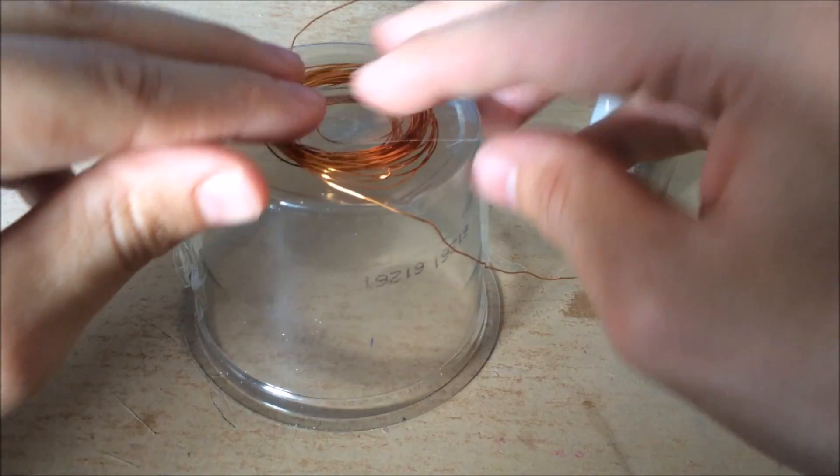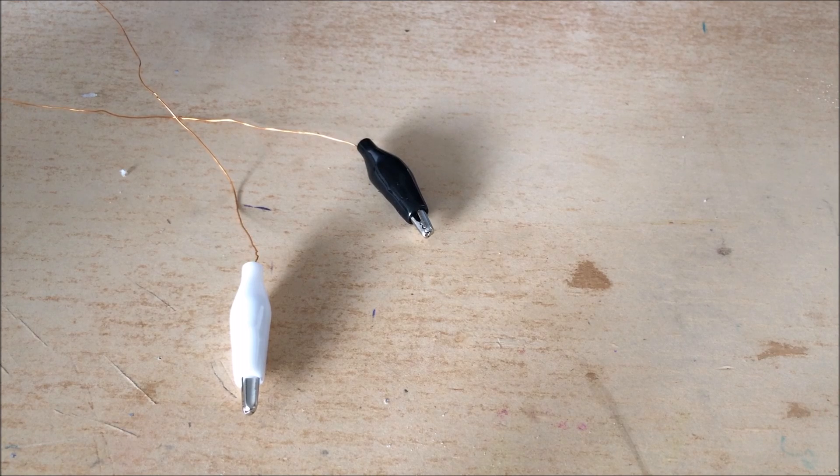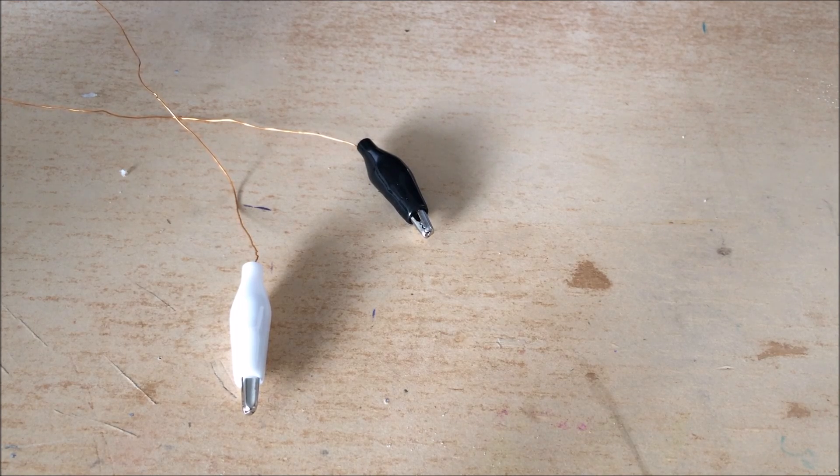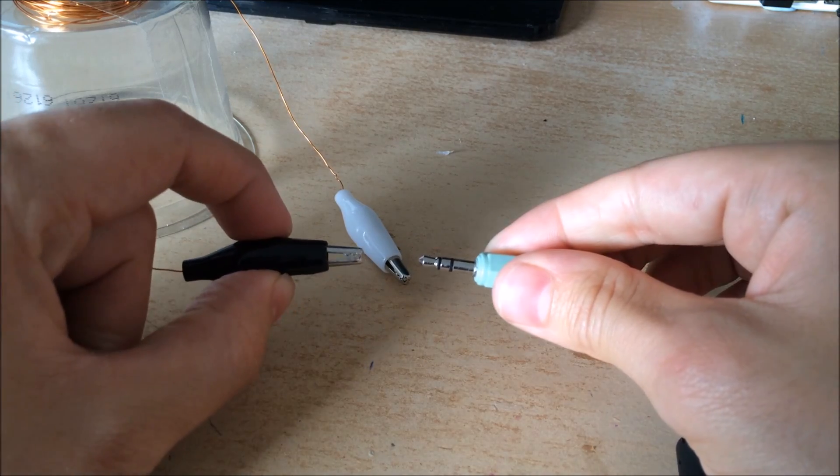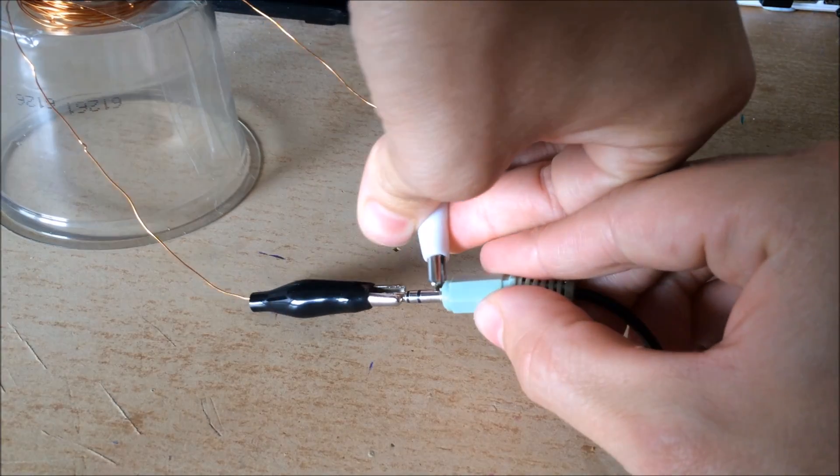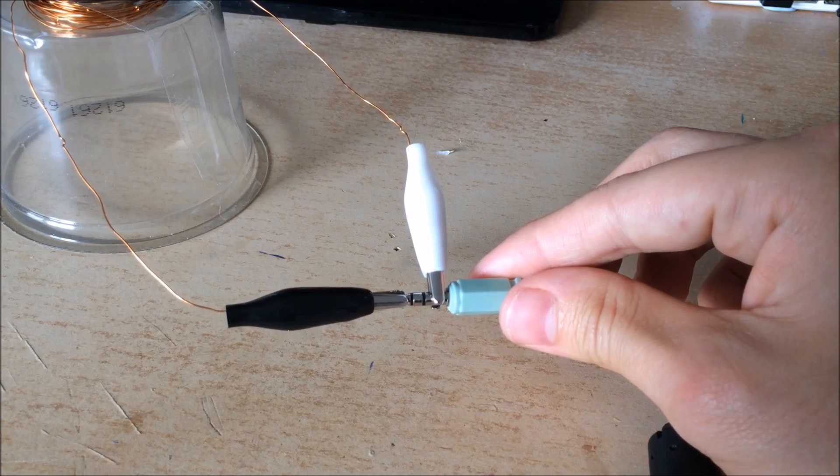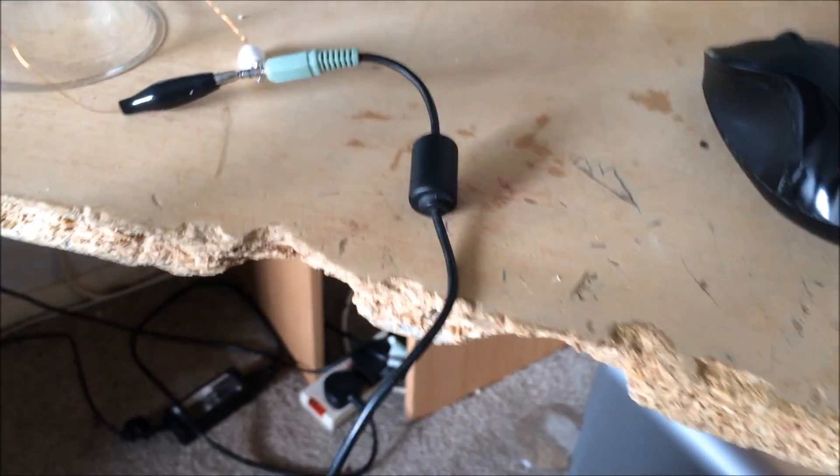There we go. I also used gator clips at each end of the wire just to make it easier to connect to the jack. I then placed one clip at the very end of the audio jack and the other just behind the back end. I then linked up the other end of the jack to an audio source ready for testing.